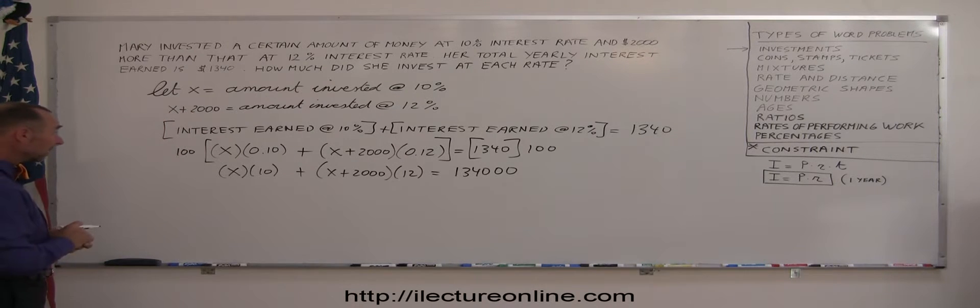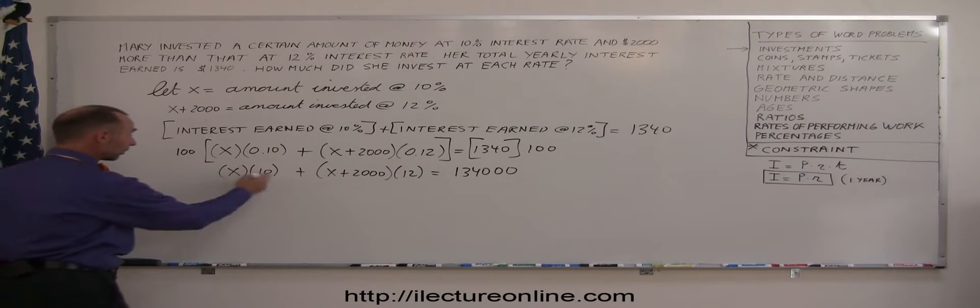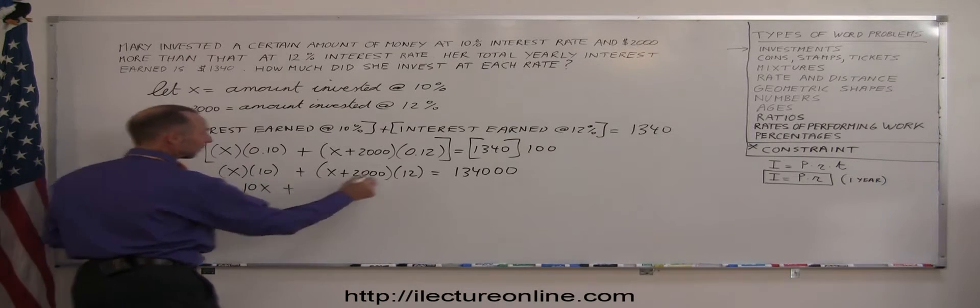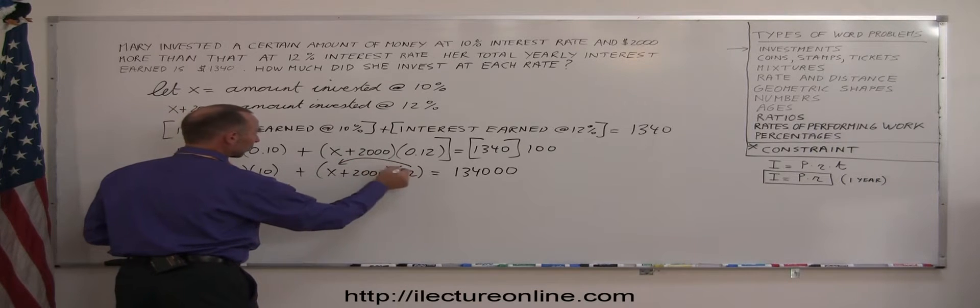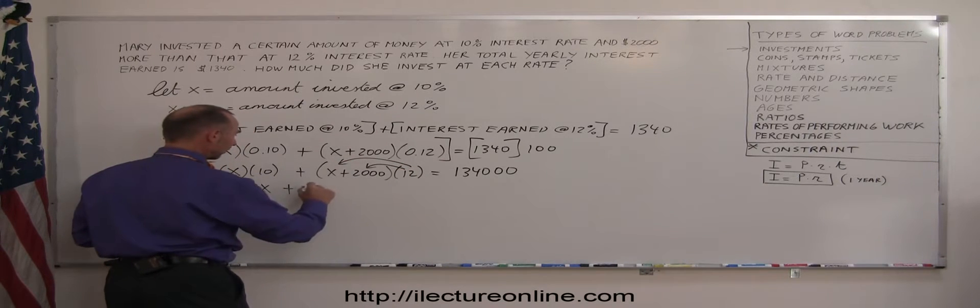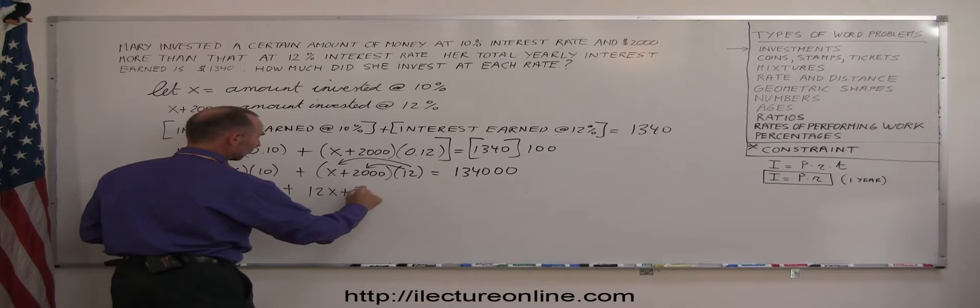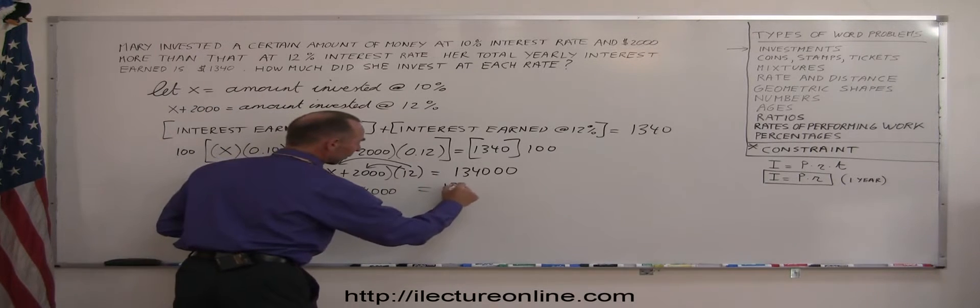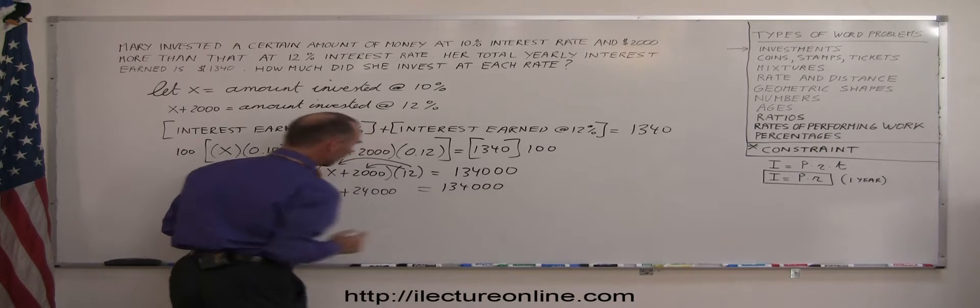The next thing I want to do is get rid of the parentheses. I'm going to multiply these together, so x times 10 is 10x. Here I'm going to multiply the 12 times the x and the 12 times the 2,000, so I get 12x plus 24,000. And that adds up to what I have on the right side, 134,000.